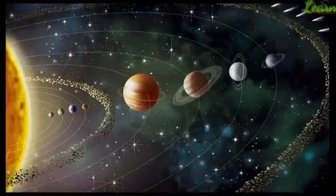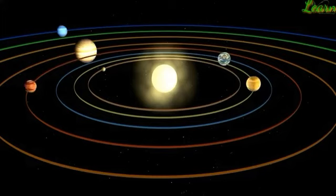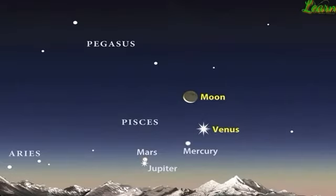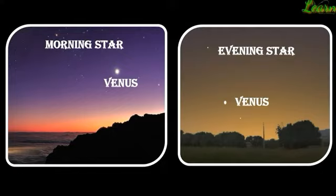Venus is the second closest planet to the sun. It takes about 225 days to complete one revolution around the sun and has no satellite. Venus rotates from east to west. It is the brightest planet in the night sky. It appears in the eastern sky before sunrise and in the western sky after sunset. For this reason, Venus is called a morning star or evening star, although it is not a star.